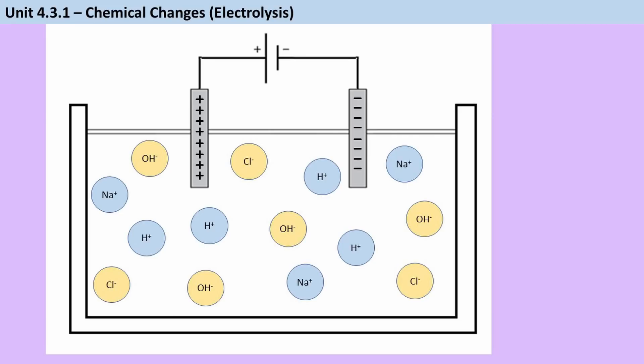So the basic principle is the same. Positive cations go to the negative cathode, because opposites attract. Negative anions go to the positive anode, because opposites attract. Here's the tricky bit. Only one of each type of ion will be discharged.